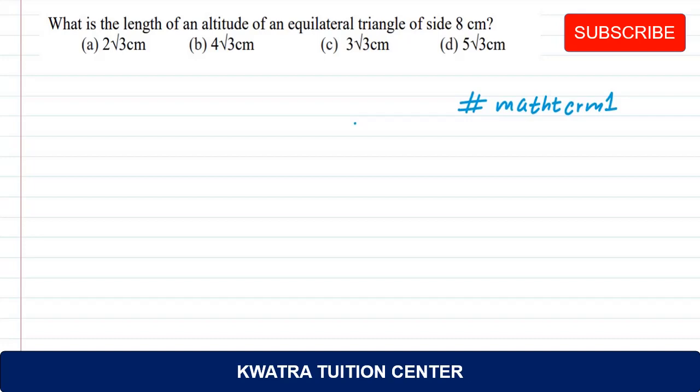Now let's see here: what is the length of an altitude of an equilateral triangle of side 8 cm? We have an equilateral triangle and its side is 8 cm each.